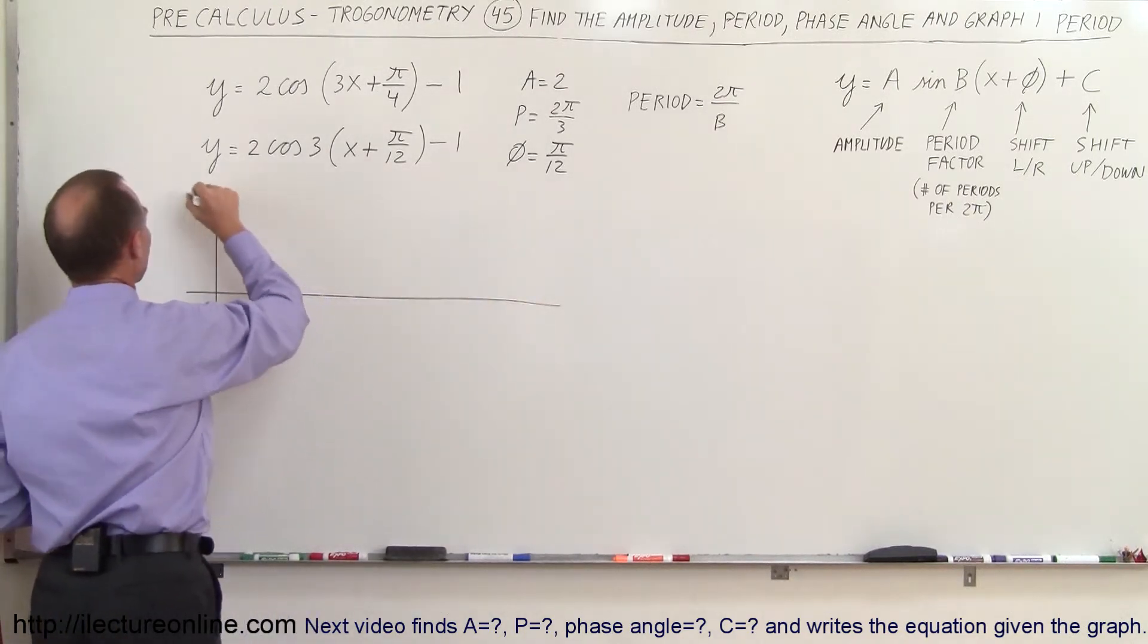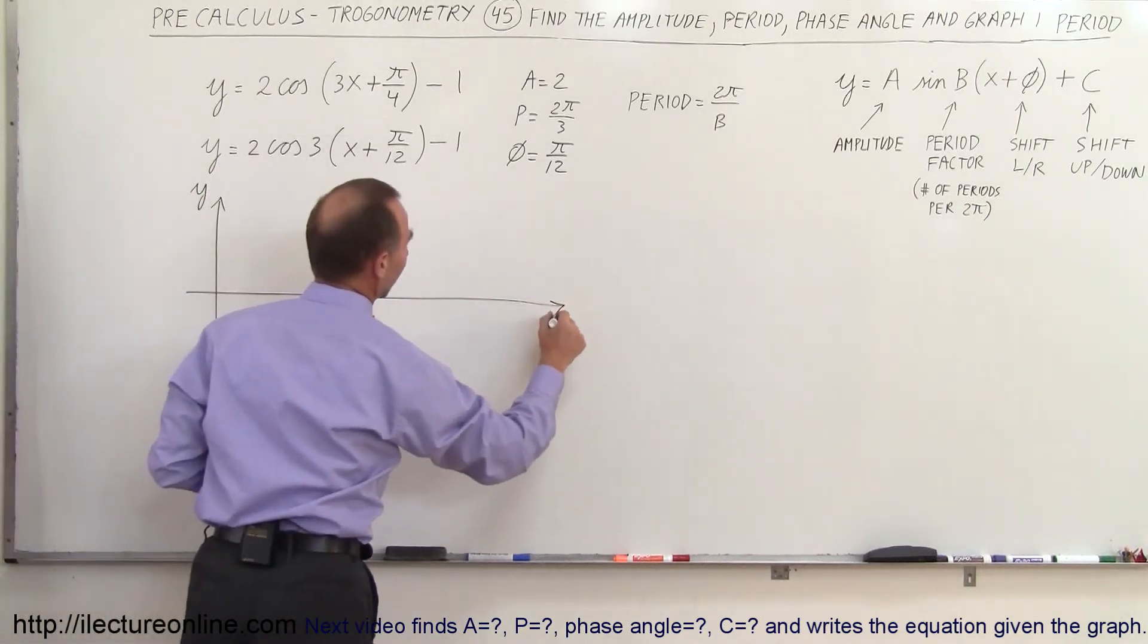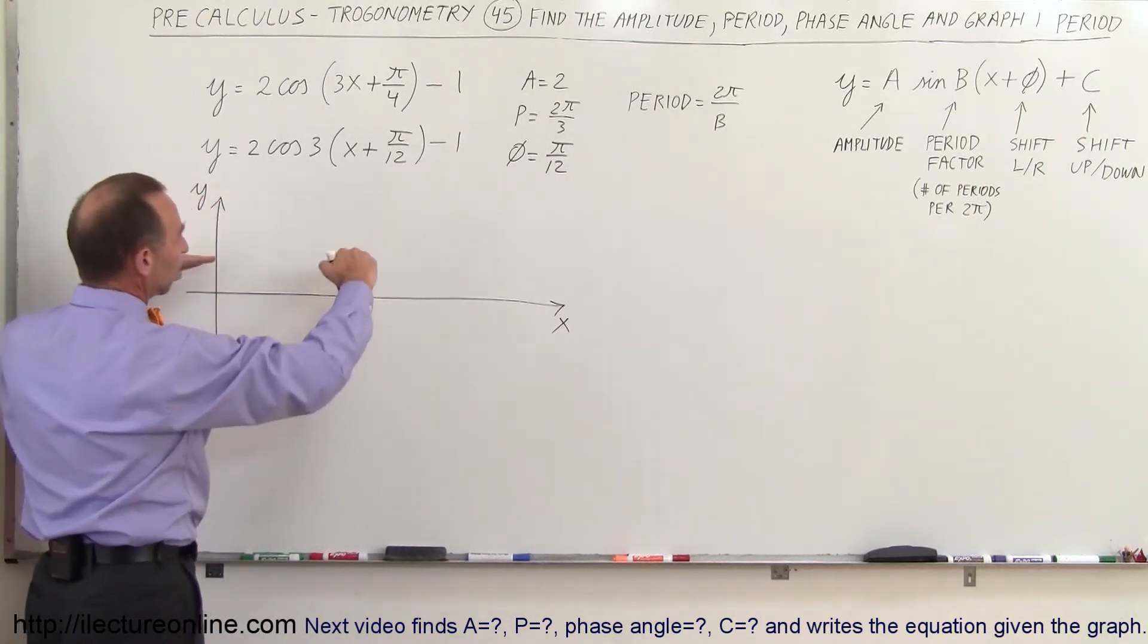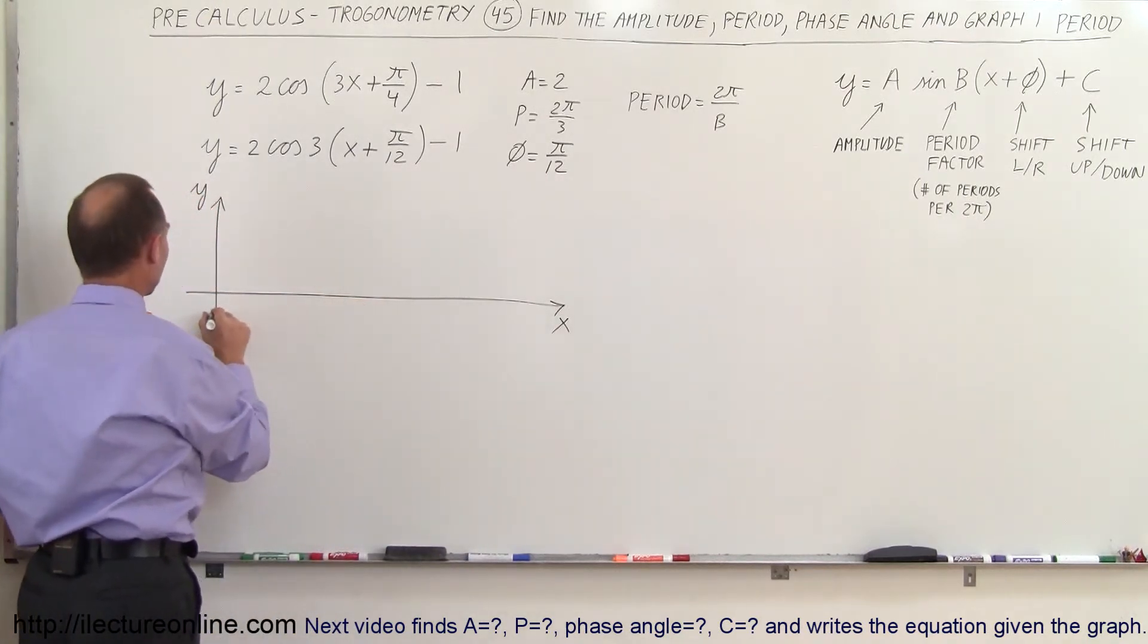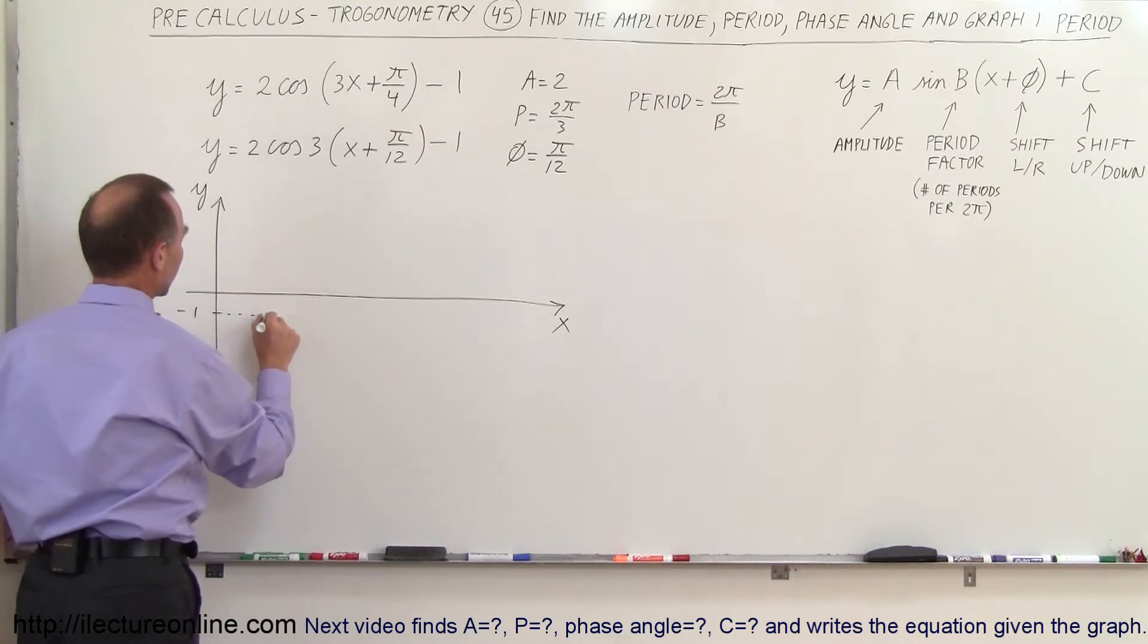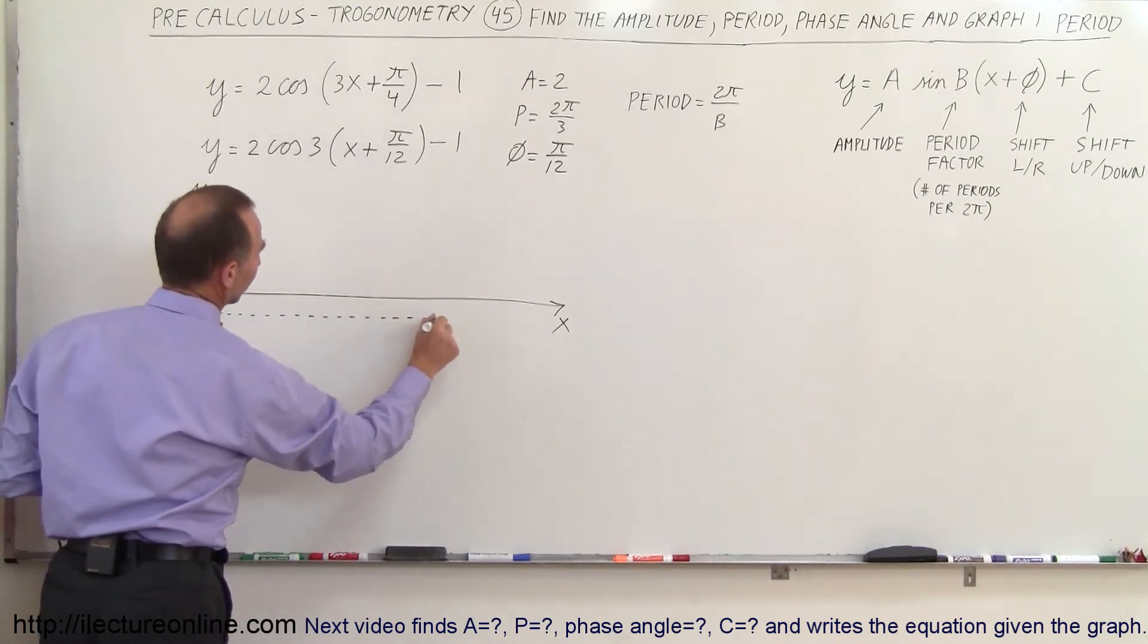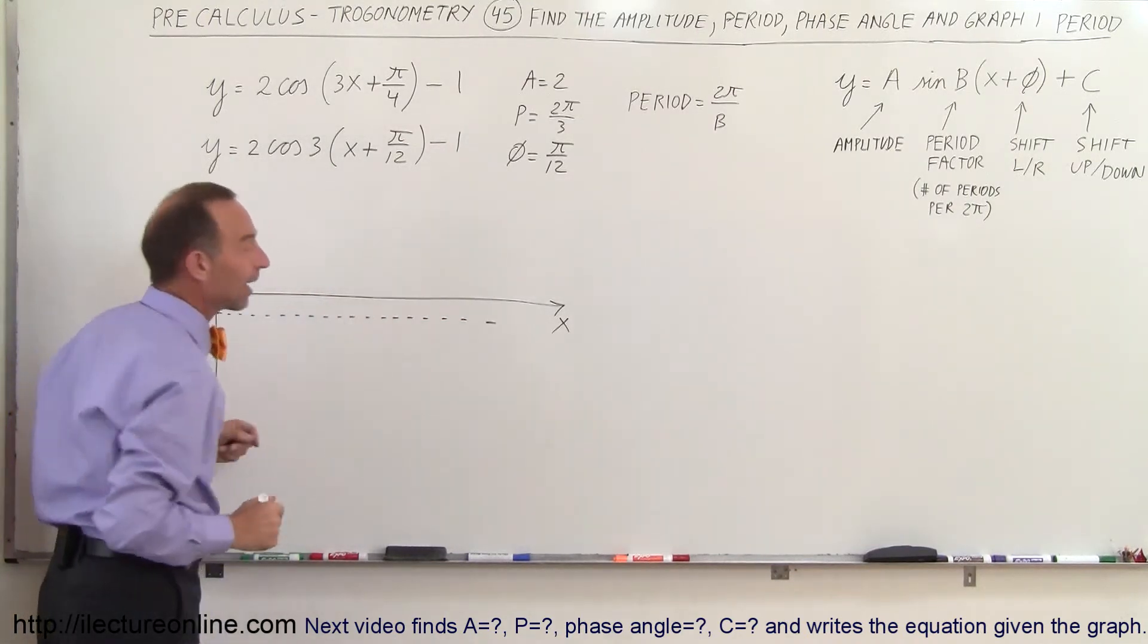So here we have the y-axis, here we have the x-axis. Notice that the whole function shifted downward by 1 so if this is negative 1 right here we're going to draw the function relative to this line not relative to the x-axis.